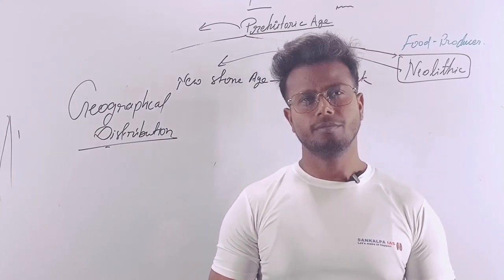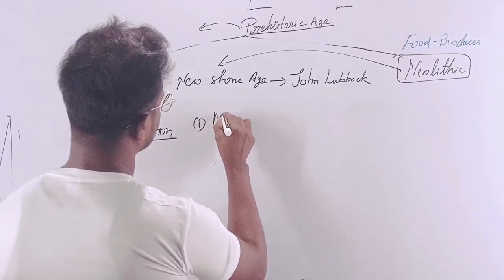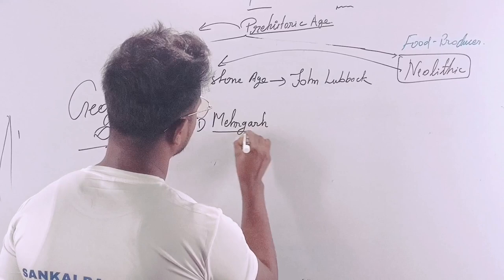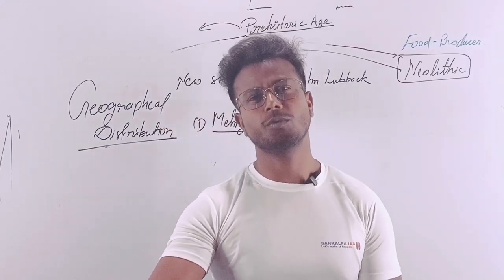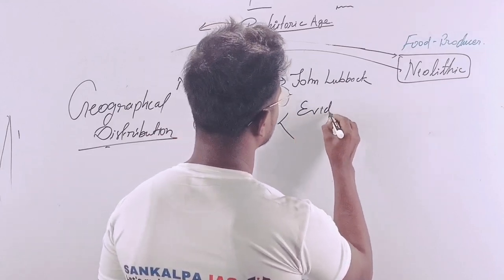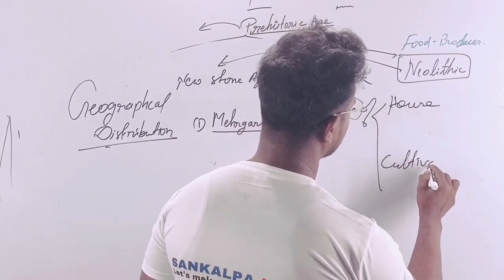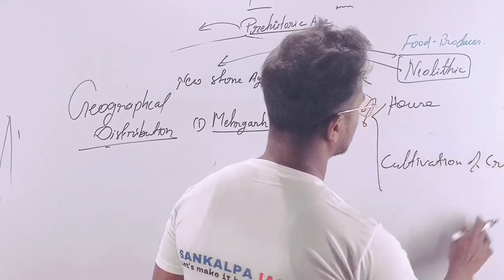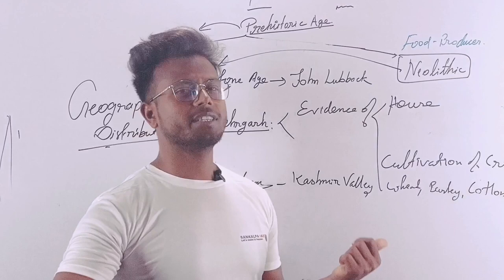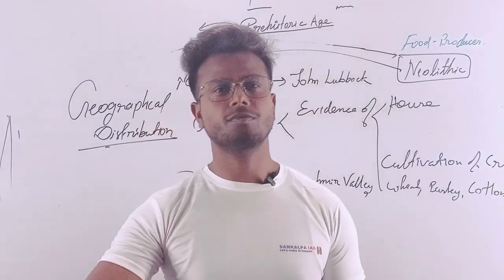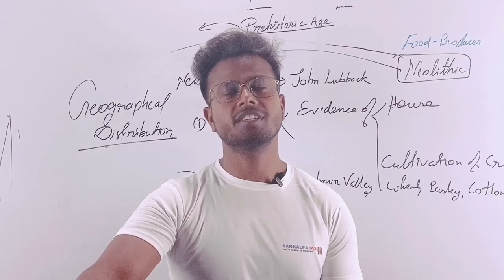There are some important Neolithic sites. Mehergarh is the site where evidence of houses and cultivation of crops like wheat, barley, and cotton has been found. Burzahom, in the Kashmir Valley, is where evidence of dwelling pits was found, along with a burial of a domesticated dog with his master.